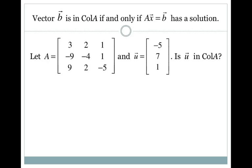A handy tool to remember is that a vector b is in the column space of A if and only if the system Ax equals b has a solution. This is saying: if b can be written as a linear combination of the columns of A, then by definition it's in the column space of A.